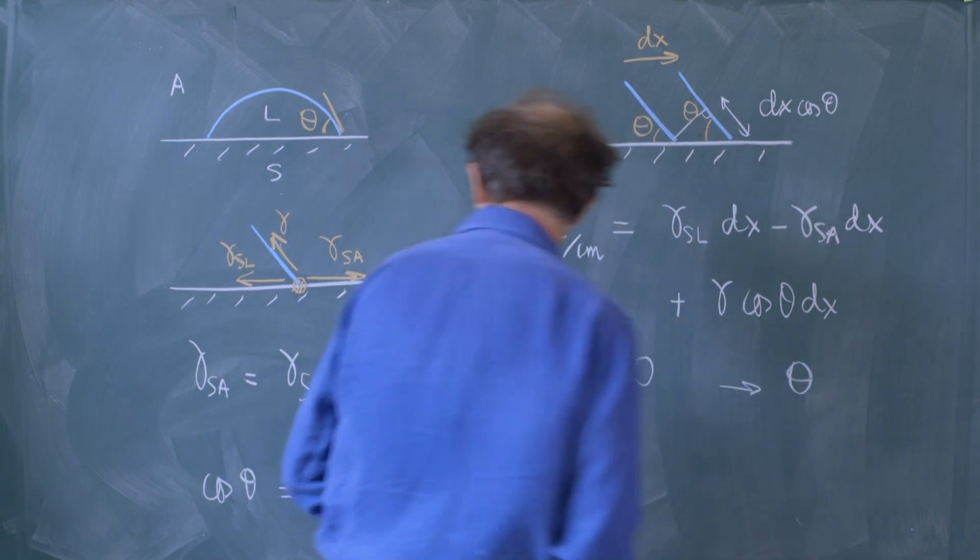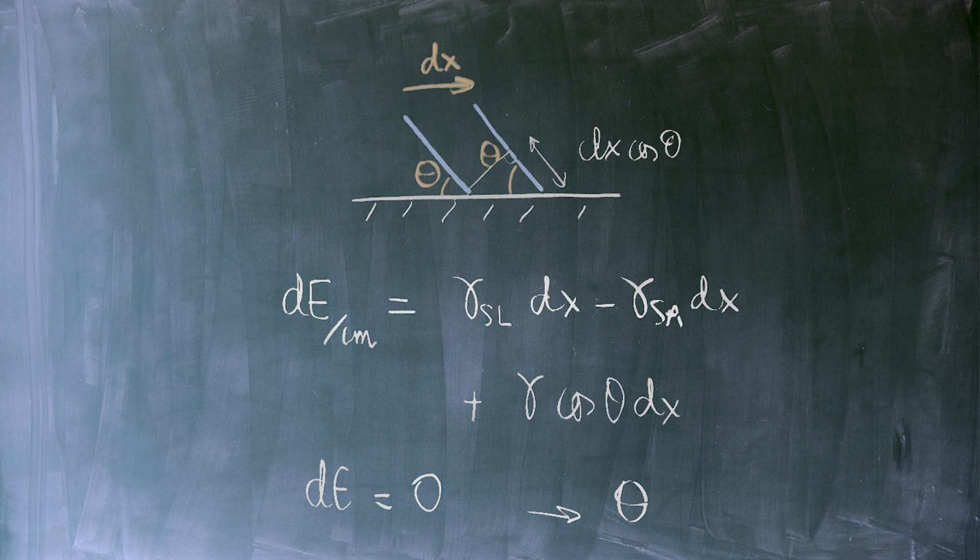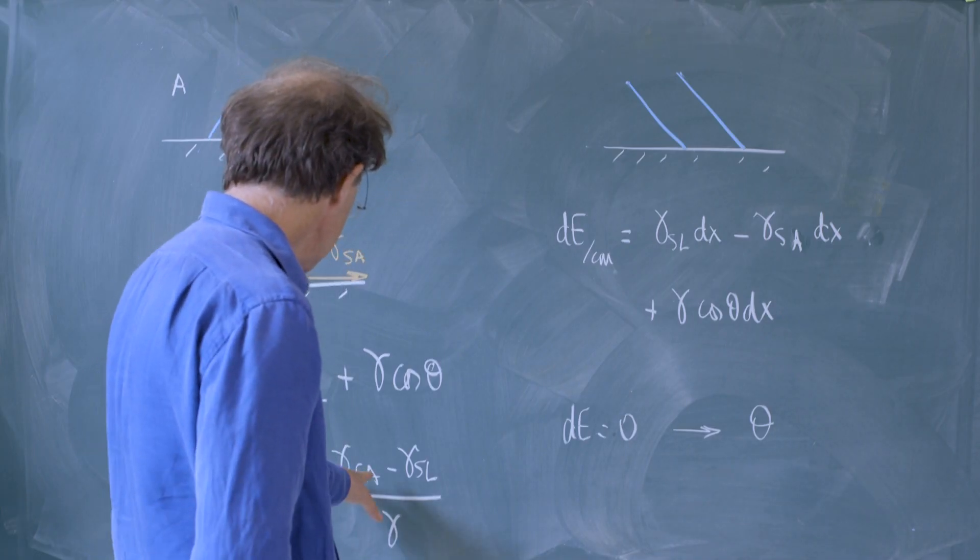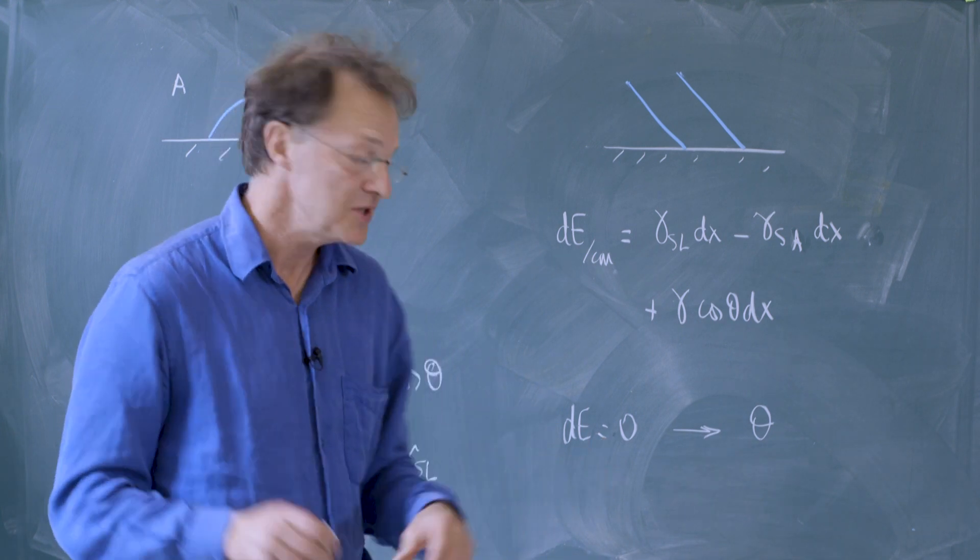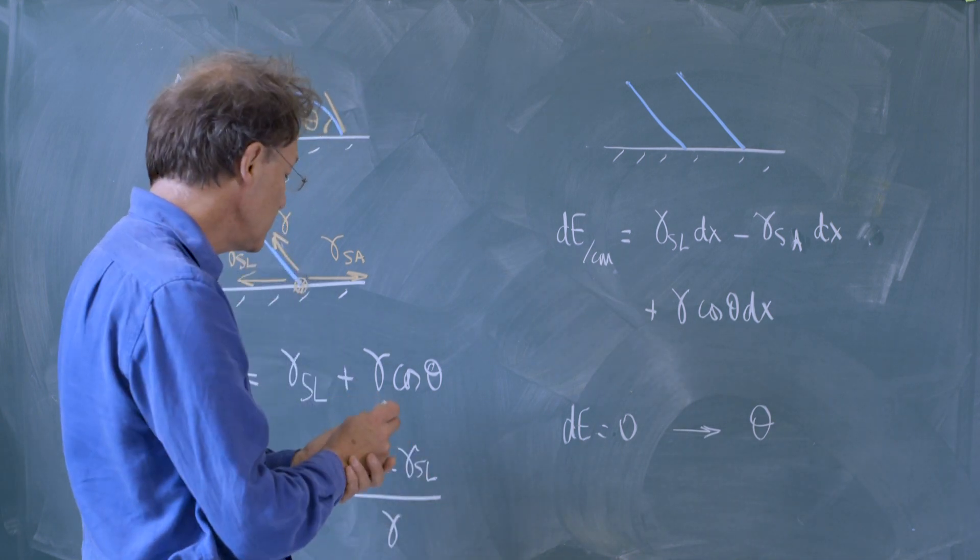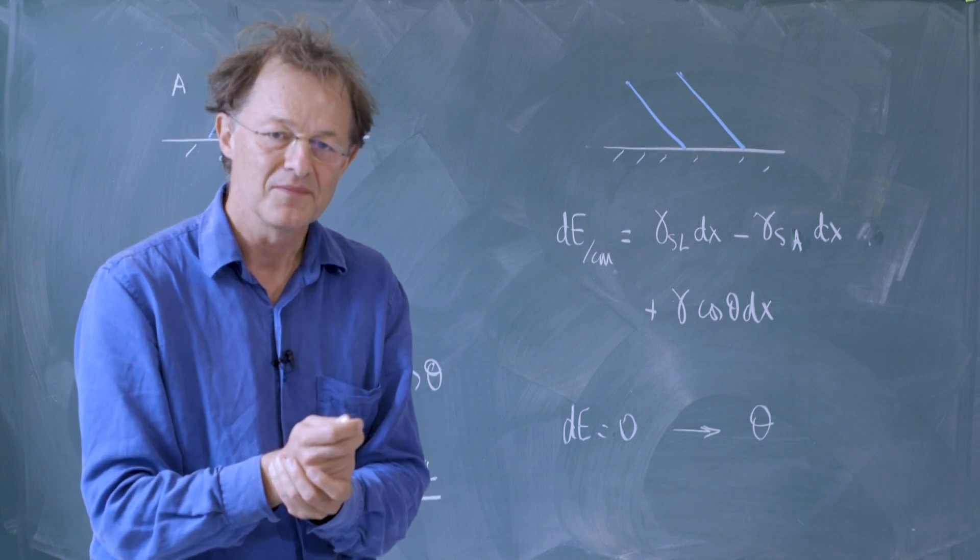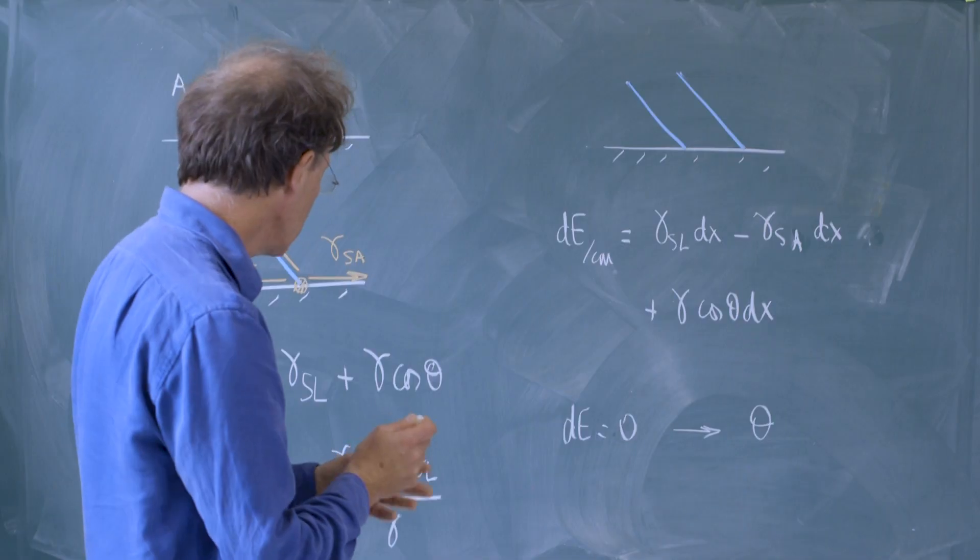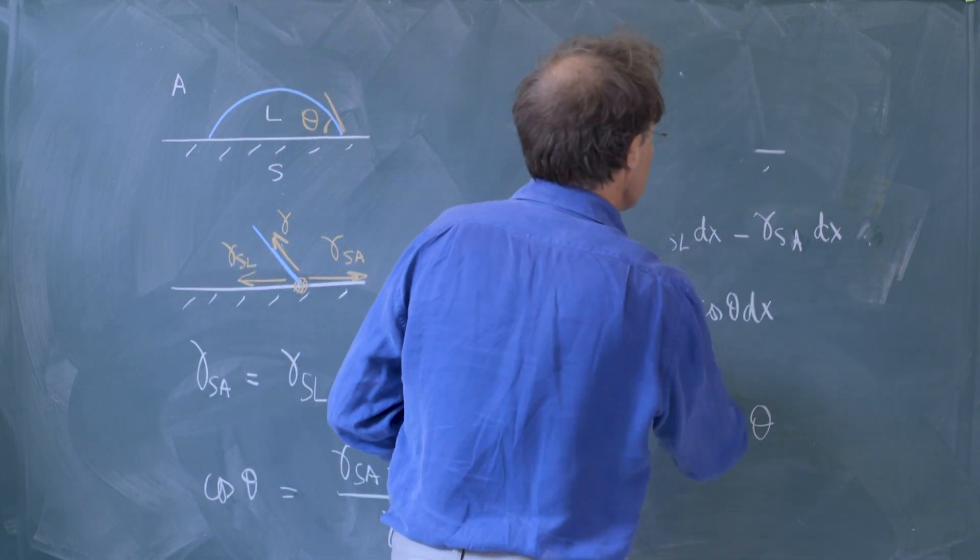When we look once more at Young's equation, we realize something interesting. If we treat the three parameters, the three surface tensions, as independent quantities, there is no real reason for this ratio to be between minus 1 and plus 1, which defines a cosine. Indeed, extreme situations of wetting cannot be described by Young's equation, and this is something we can realize with a very simple sketch.